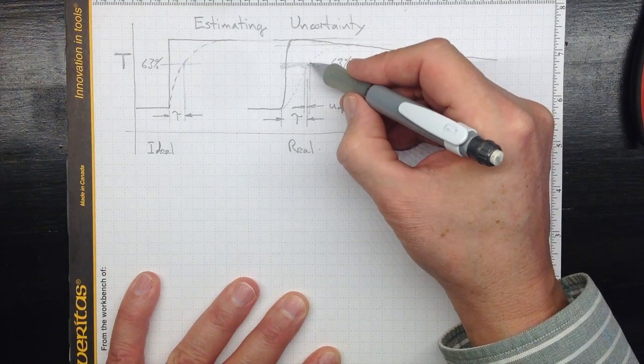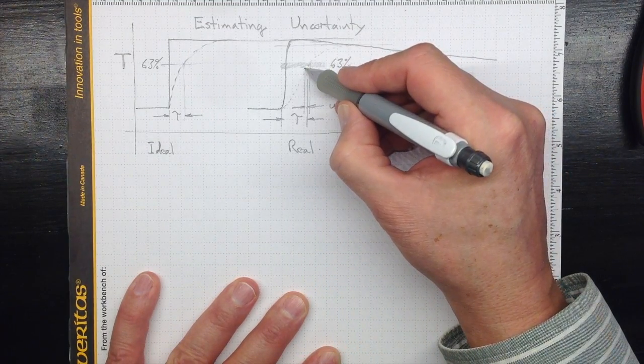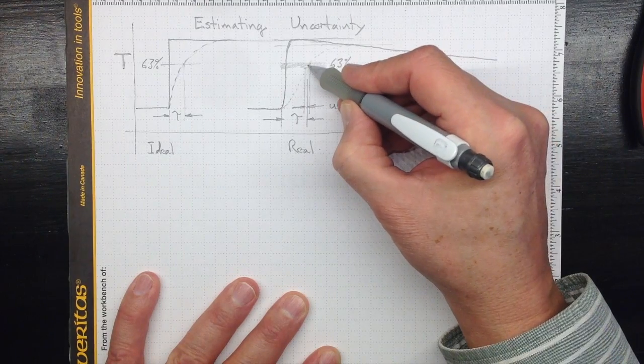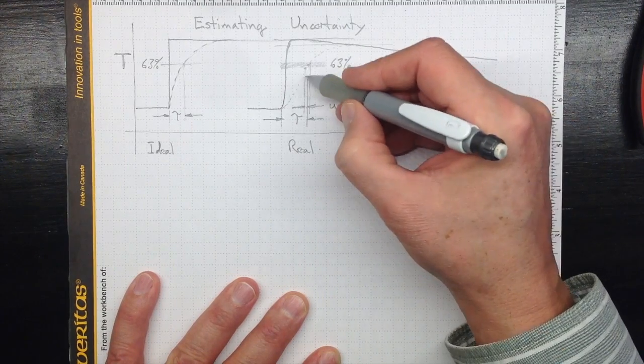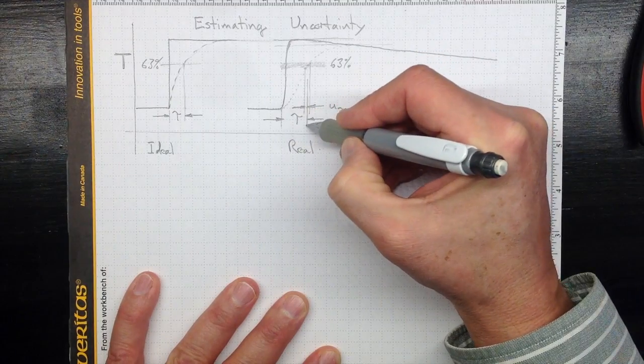That means that the time when we got there is somewhere between here and about here. So our best estimate is somewhere in the middle there, and we can still pull off a time constant.